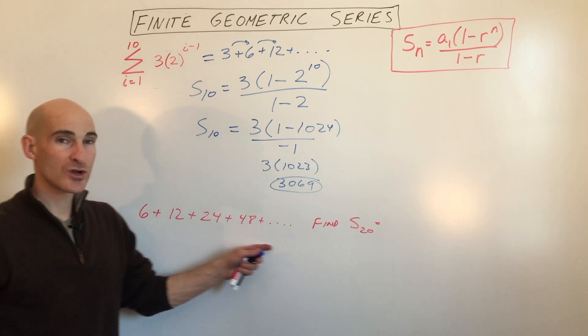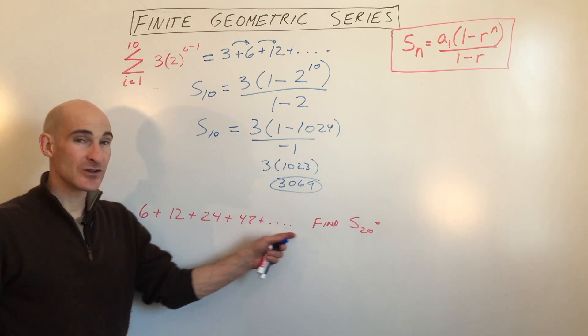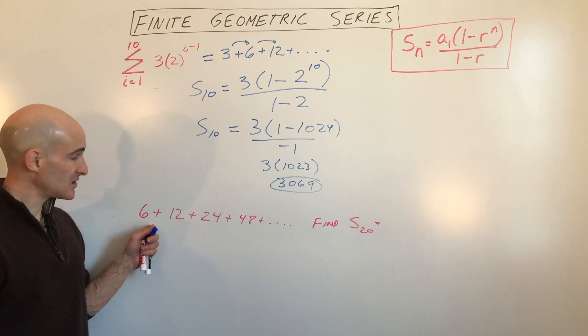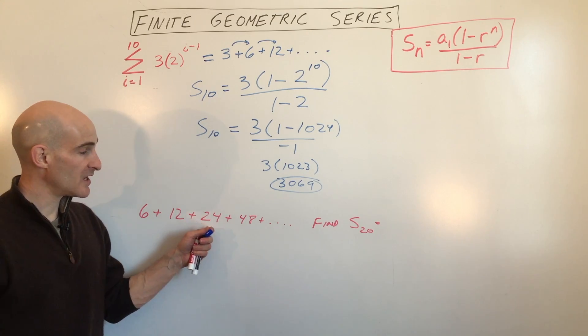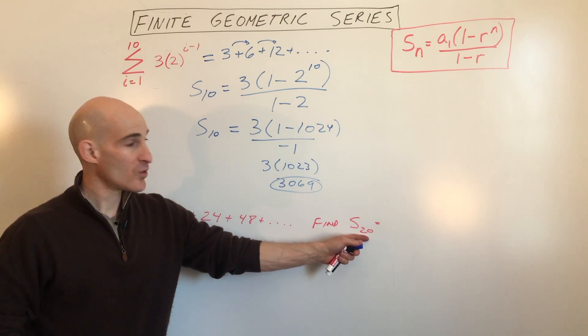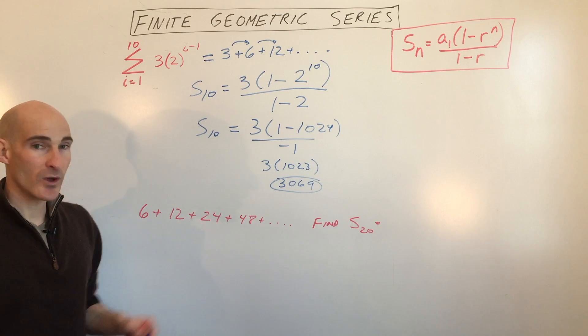The next example we're going to look at, here they've written out the series for us. You can see the first term is 6. It looks like they're multiplying by 2 again to get the next term. And they want us to find the sum of the first 20 terms. So they made it a little bit easier on us on this one.